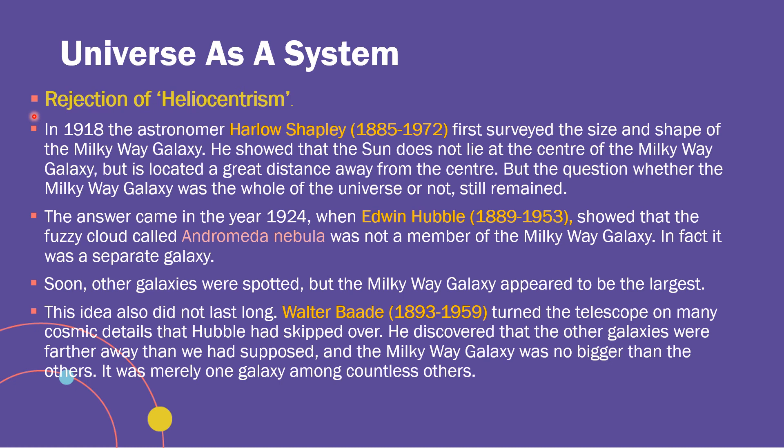Scientists believed the universe consisted of the Milky Way galaxy, that it was the largest galaxy, that the solar system was at its central part, and that the sun was situated at the very center of the Milky Way galaxy. However, these ideas were later shattered — this is the rejection of heliocentrism.